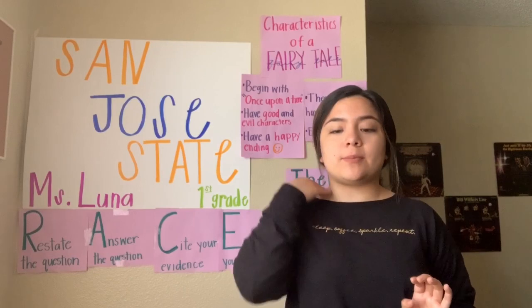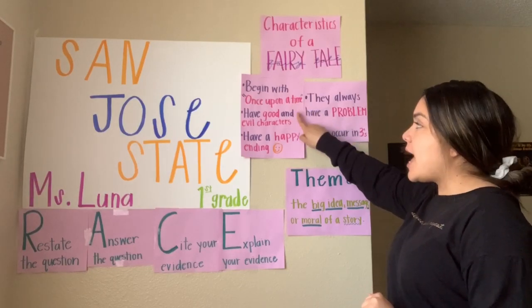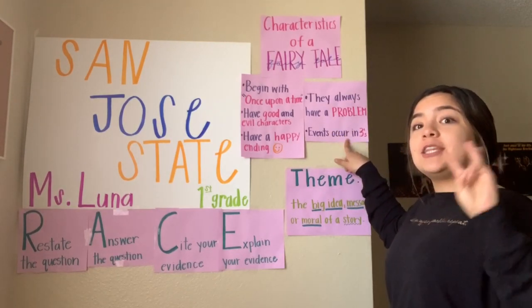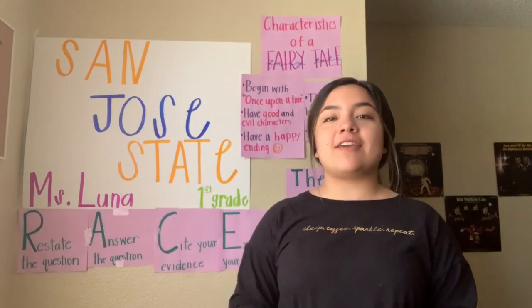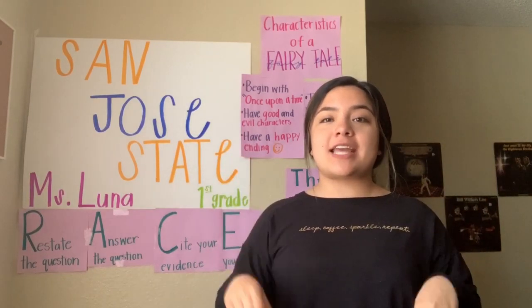All right, scholars — we just read Mary Had a Little Ham. Before I give you your final question, let's review: what are the characteristics of a fairy tale? They begin with once upon a time, have good and evil characters, have a happy ending, always have a problem, and events occur in threes. Awesome job. Now let's do our modern day fairy tale chant: Modern day fairy tales are fairy tales that we change up, so it takes place now, not a long time ago.